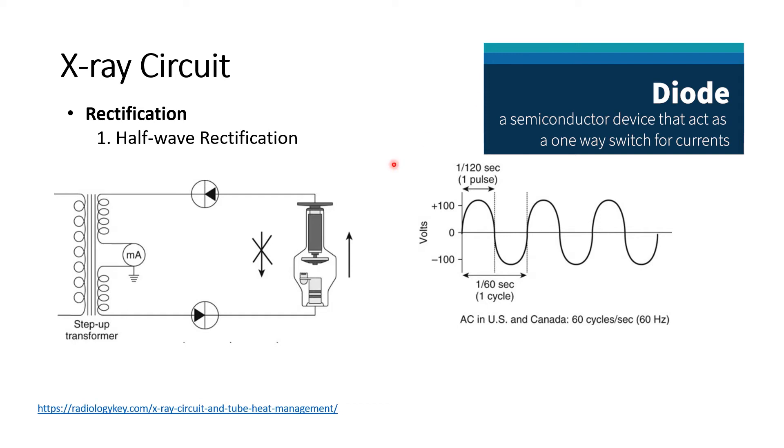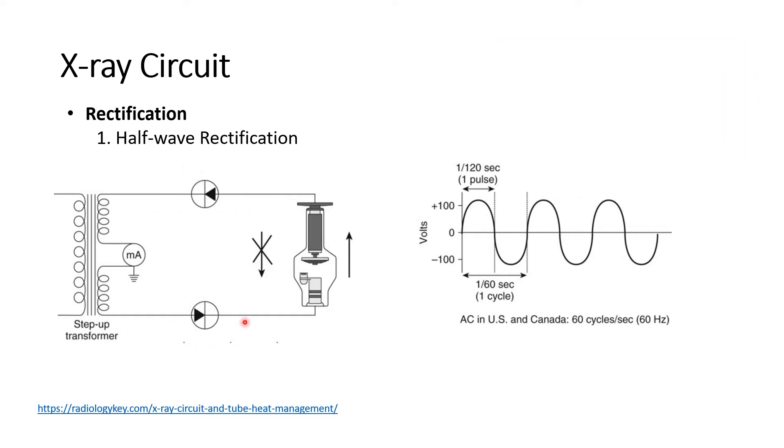Two diodes are used in half wave rectification. In this case, we eliminate the negative cycles, thus producing gaps in this part of the cycle. The X-rays are turned off during the negative phase and electrical current flows in the positive cycle only. This process alternately turns on and off the X-ray at the rate of 60 Hz.